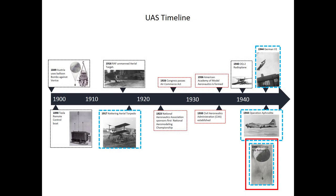The Japanese fire balloon was the first ever weapon possessing intercontinental range. Taking advantage of the jet stream, the Japanese launched over 9,300 balloons from 1944 until the end of the war in 1945. Of the 9,300 balloons launched, only 300 were found or observed in the United States. The balloons carried various payloads of anti-personnel and incendiary bombs, and were intended to instill fear and terror in the U.S. The bombs were relatively ineffective as weapons of destruction, resulting in only six deaths from one incident.